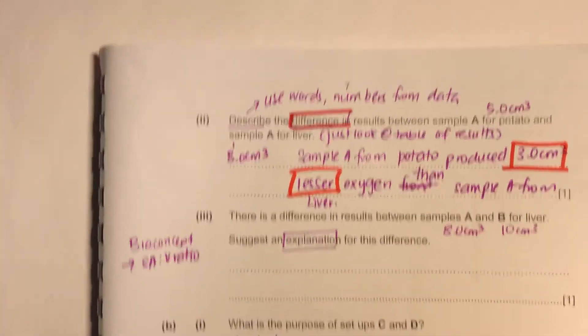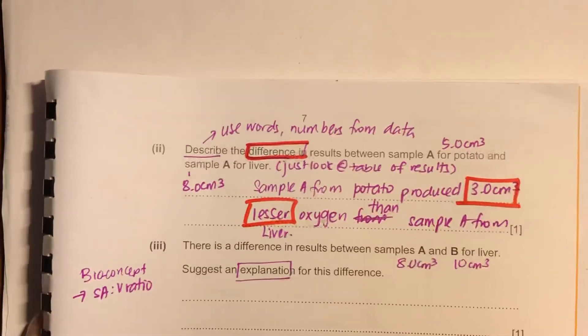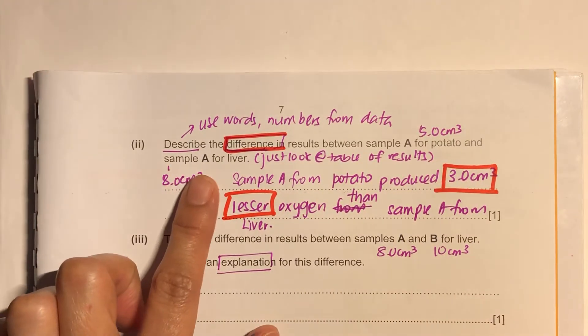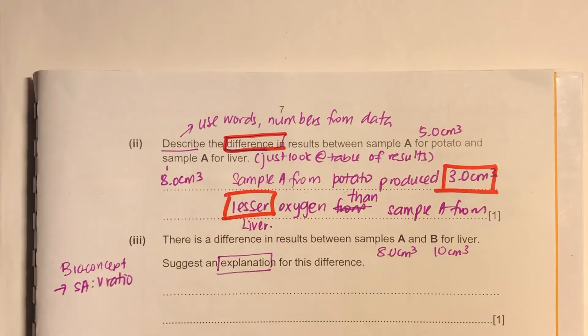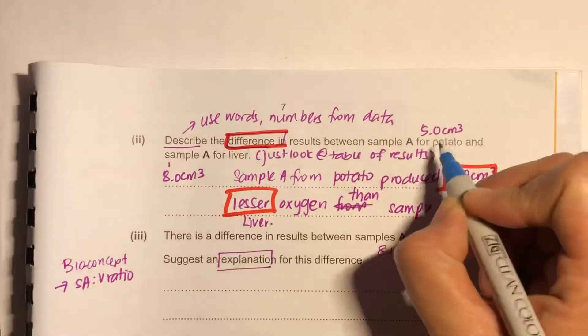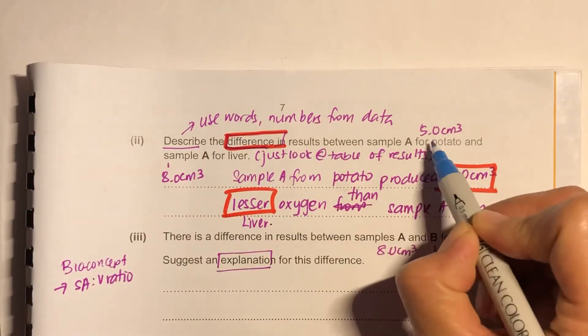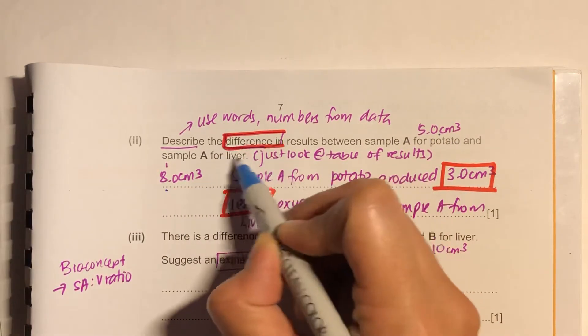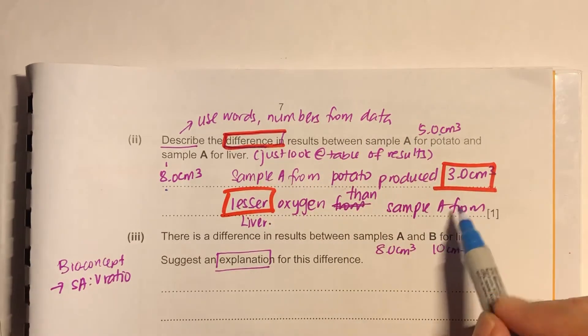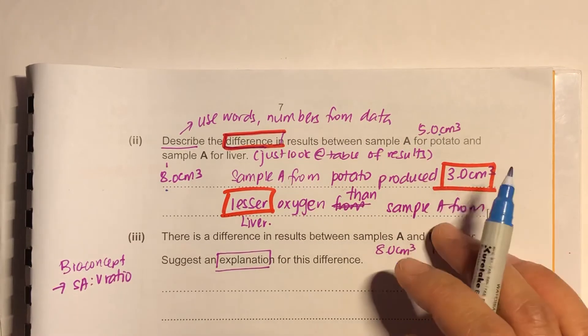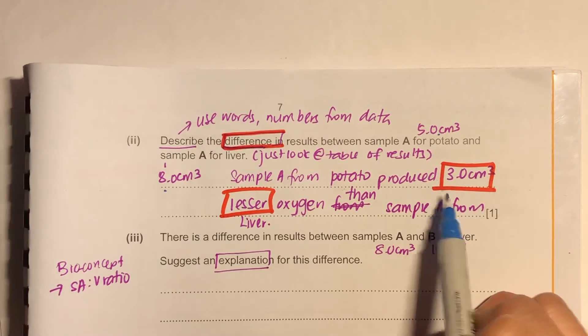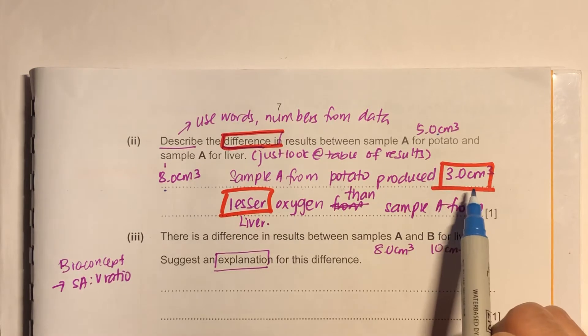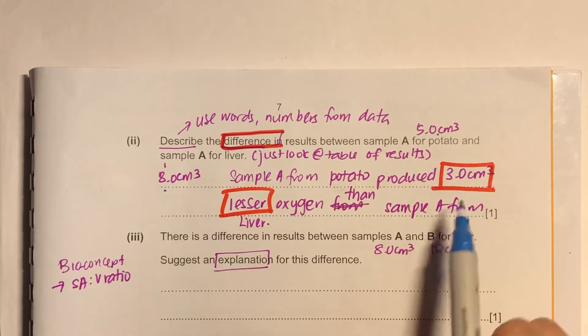Describe the difference between sample A for potato and sample A for liver. So annotate. Girls, please annotate to help you do it. Answer this question. So first, you can write down five cm³, eight cm³. Then they ask you to describe the difference. So you can either say higher.